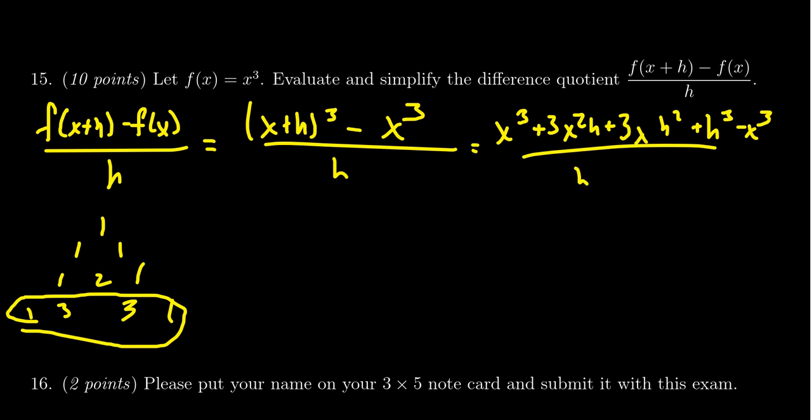Then you're going to see that the x cubes will cancel out. Everything from the f of x part will cancel with something from the f of x plus h part. So you're left with 3 x squared h plus 3 x h squared plus h cubed.